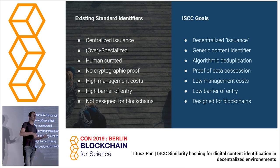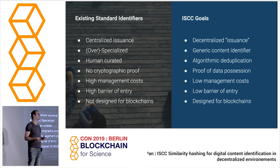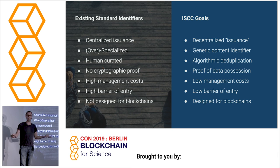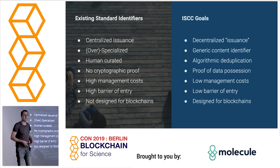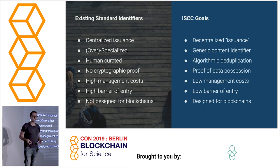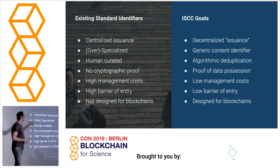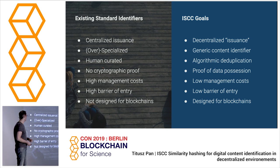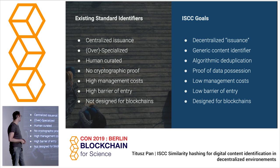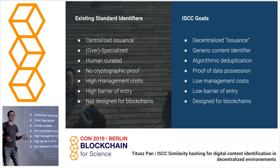If we want content to be what we talk about in our transactions, how do we reference it? There are many content identifiers out there, but they are not working well. For example, if you find an image on Twitter and want to use it, what's the identifier to reference it? Existing standard identifiers are usually centrally issued — you have to send a fax somewhere and register a number. They are often over-specialized, curated by humans, have no cryptographic features, have high management costs and high barriers of entry, and are really not made for the blockchain world.